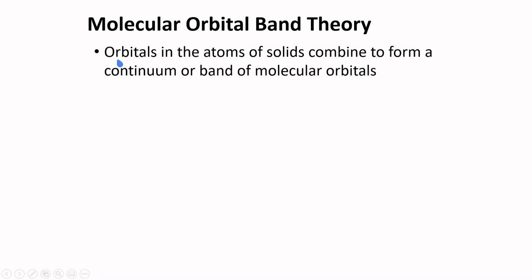The properties of solids can also be explained by molecular orbital band theory. Here, orbitals in the atoms of solids combine to form a continuum or band of molecular orbitals. If we have one sodium atom, it has one valence electron occupying the 3s orbital.